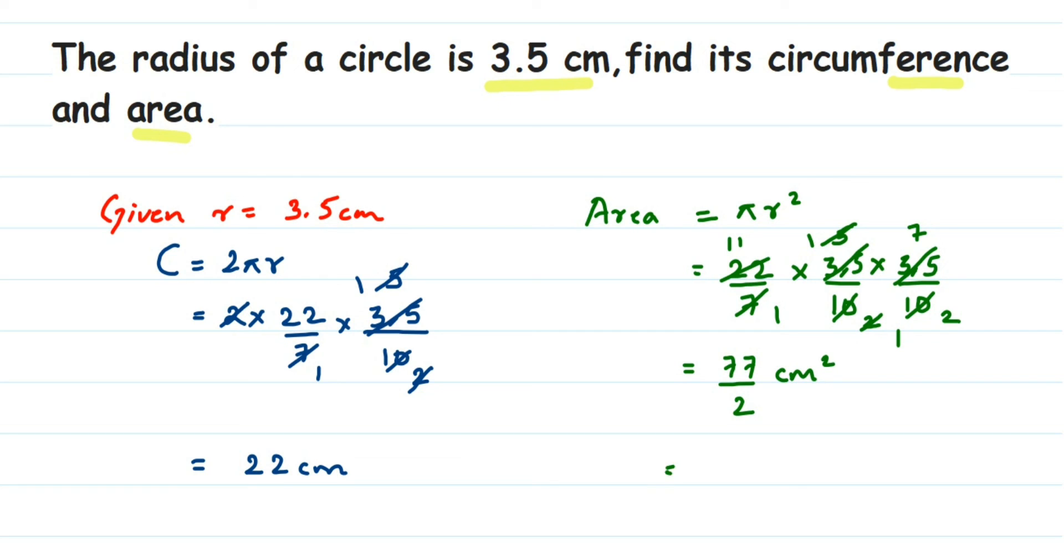You can leave the answer here itself if you want, or if you want to write down the answer in decimal, you can write this as 38.5 centimeters squared. You can leave the answer here itself if you want, or to proceed further you want to write down the answer in decimal, divide 77 by 2 and you'll get 38.5 centimeters squared.